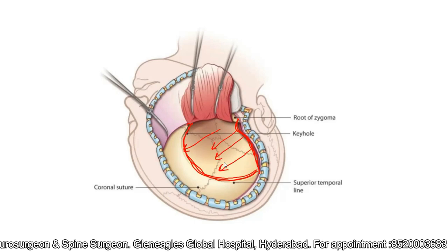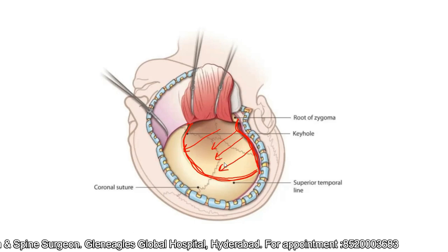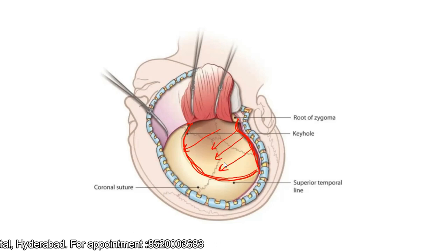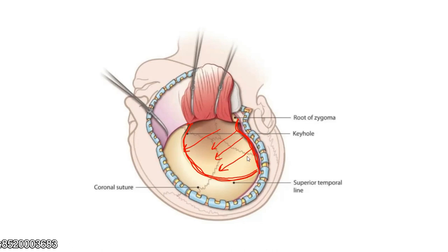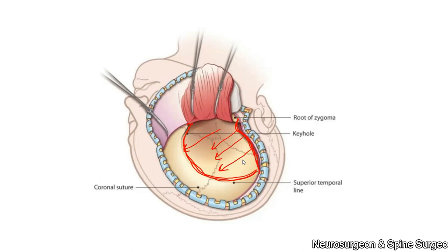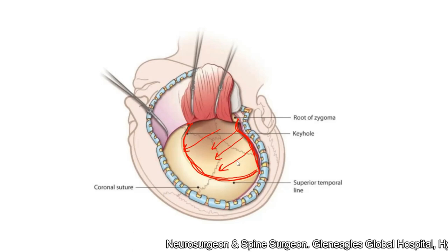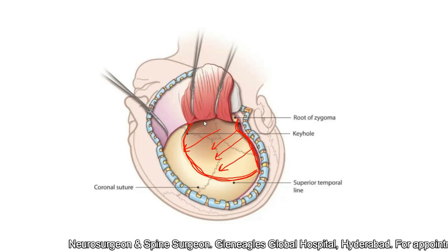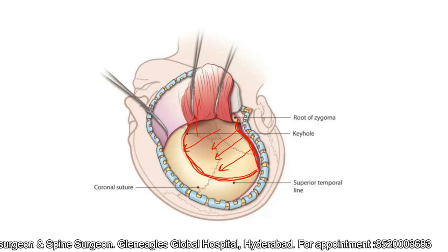If you are planning to replace the bone flap, you would leave that cuff for suturing. But because this is a decompressive craniectomy and you are not planning to preserve the bone flap, that precaution is not required. Now the temporalis muscle is reflected backward.